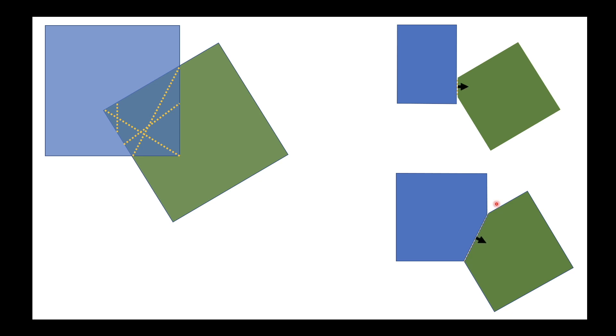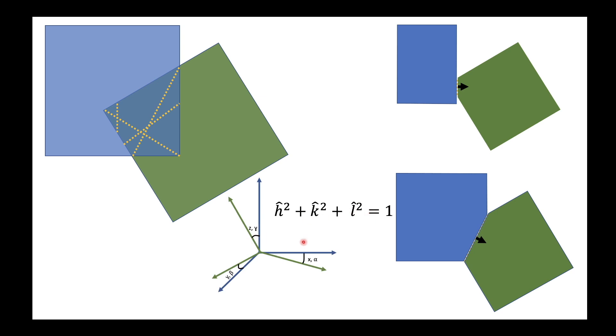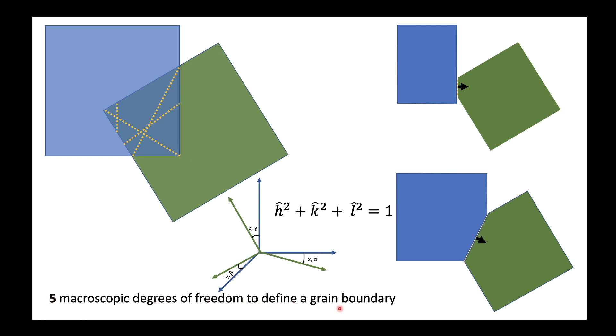To define the grain boundary plane we need a unit vector normal to it. Since we only need a unit vector, we have the relation h² + k² + l² = 1, meaning if we know two of the components the third is determined. So we need two degrees of freedom to define the grain boundary plane normal, plus three angles to define the misorientation — giving us five macroscopic degrees of freedom to define a grain boundary.